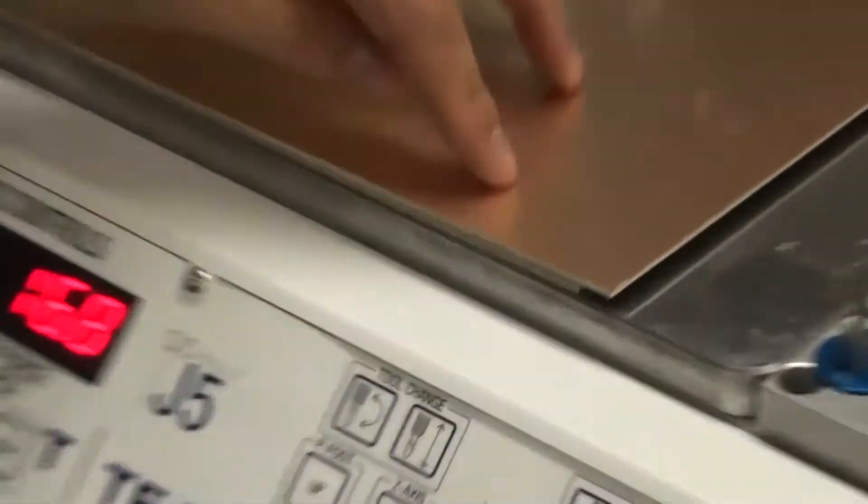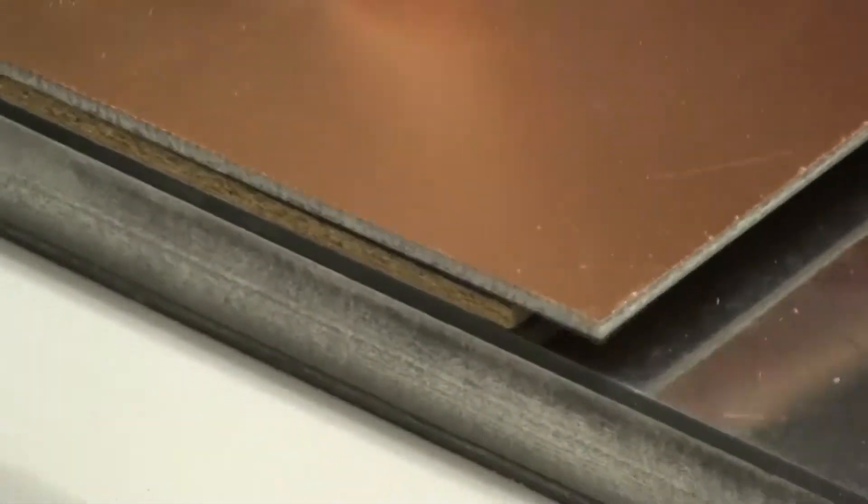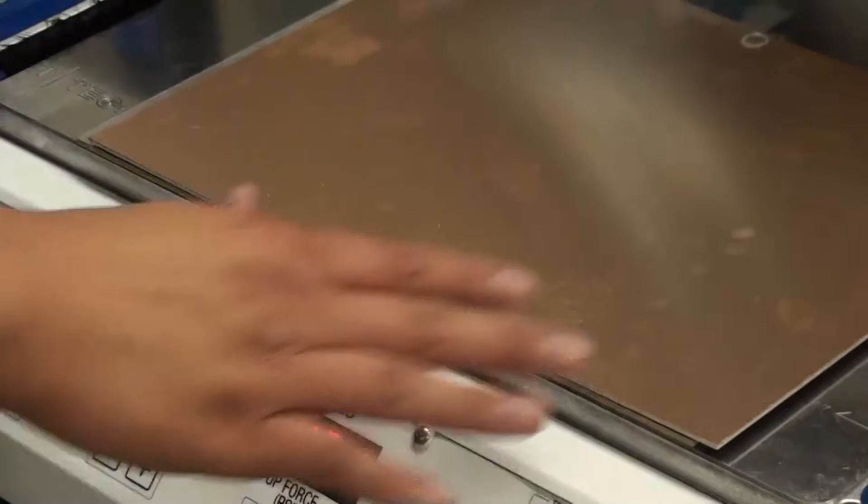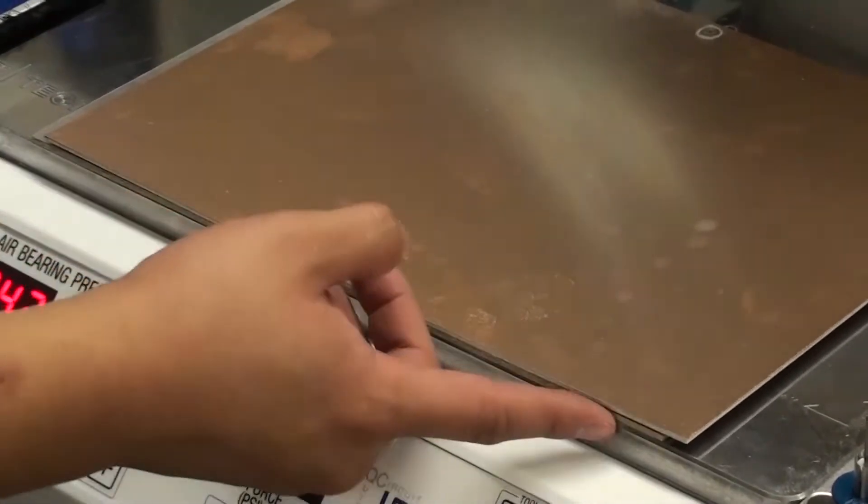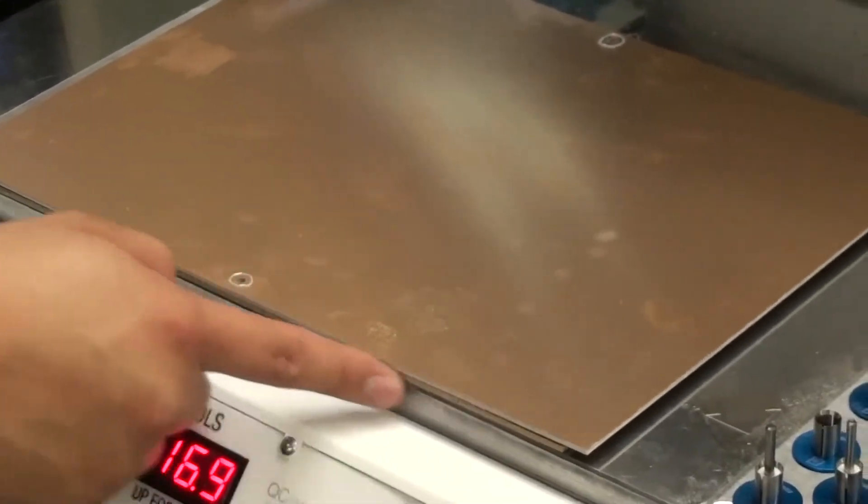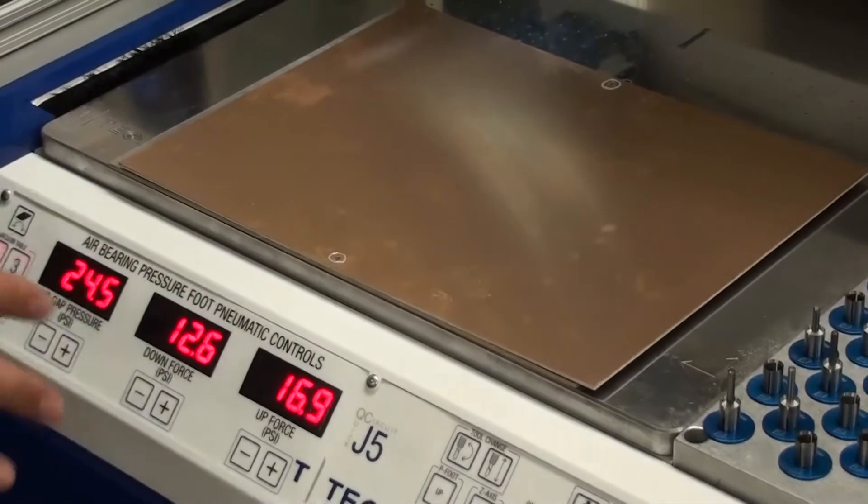So if we turn on the vacuum table, it should improve things. However, this board is kind of a little bent. And that could have something to do with that vacuum material underneath because it's been previously milled out.